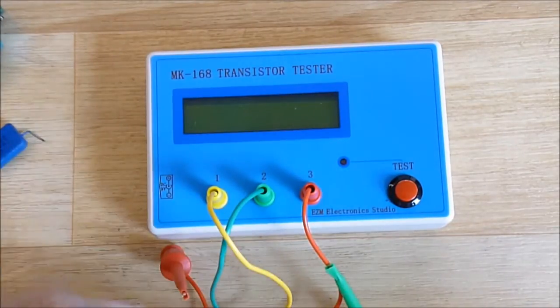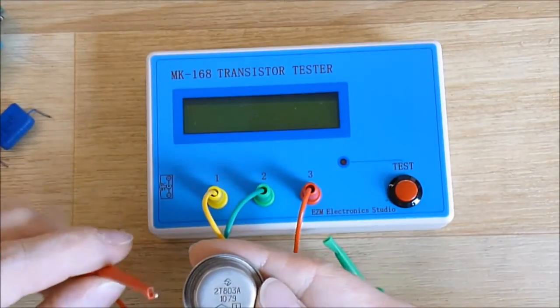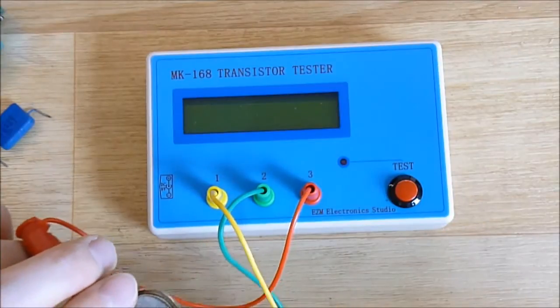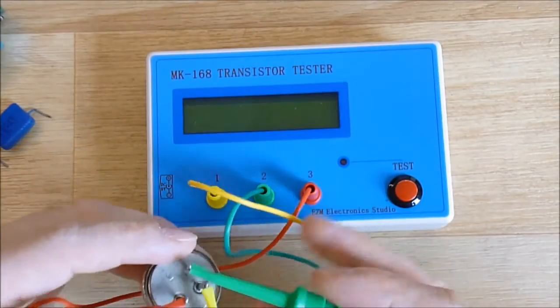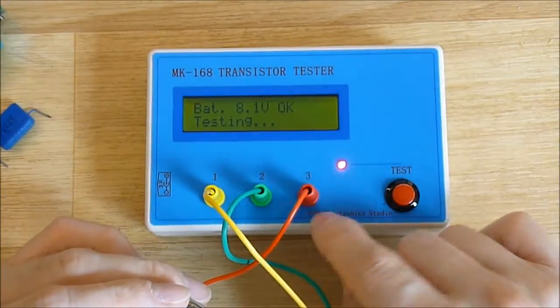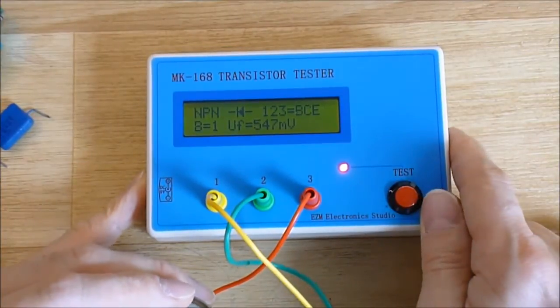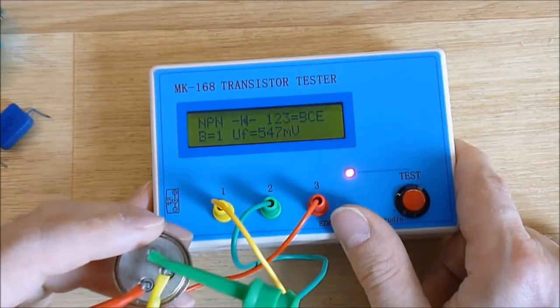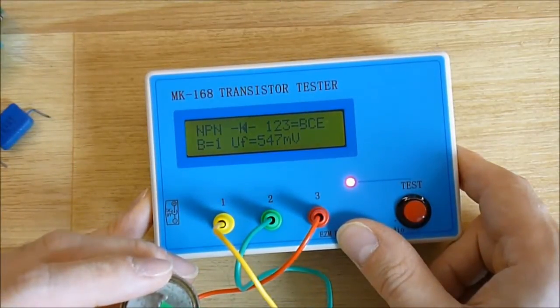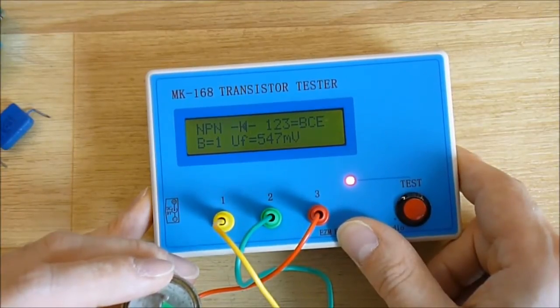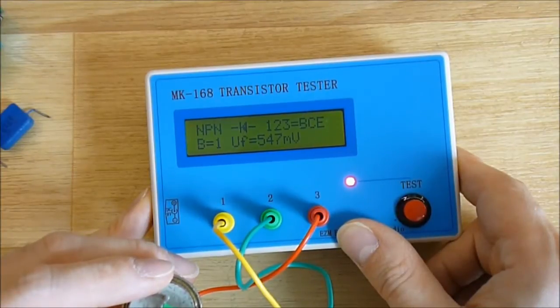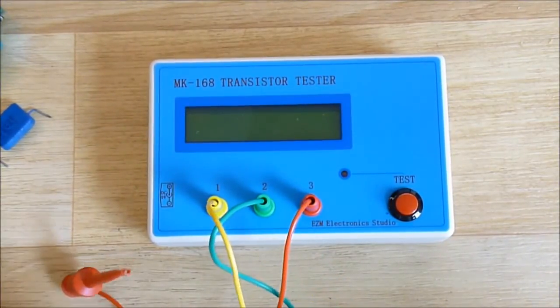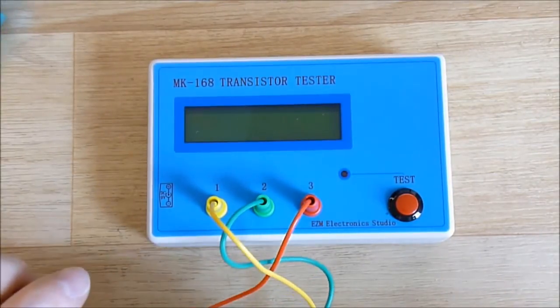I have one last transistor for you, 2T803A. These little wire grip things are very nice and the banana jacks are good quality. It's NPN, beta is 201. For checking parts it is good.